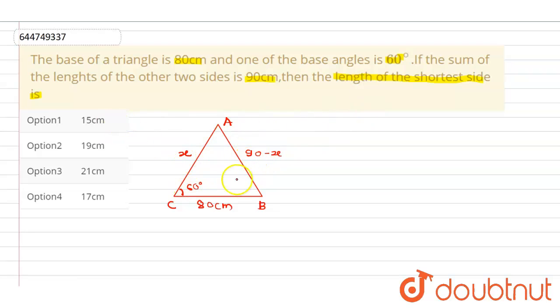Now we have all three sides and one angle, so we can use the cosine rule here to get our x. Now let me show you how.